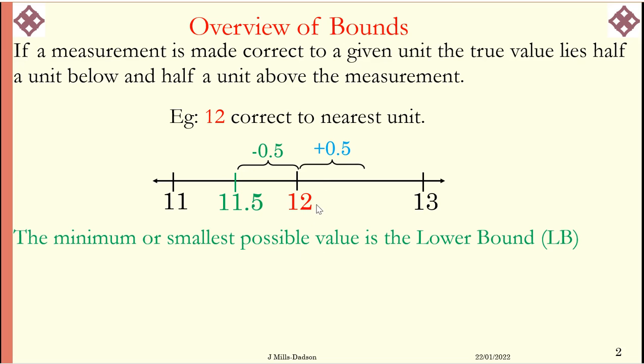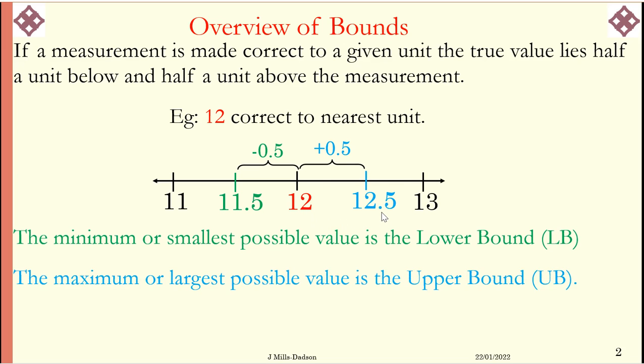And 0.5 above, 12.5 becomes the biggest, or the upper bound, or the largest possible value. So we are saying that the value lies halfway between 11.5 and 12.5.